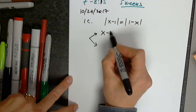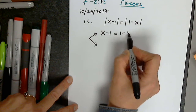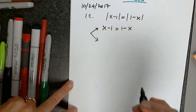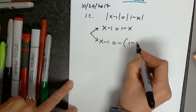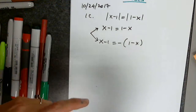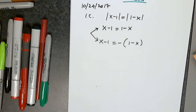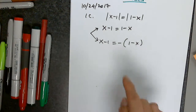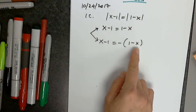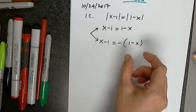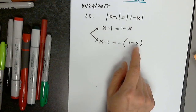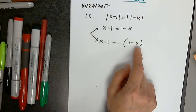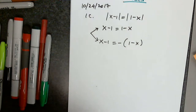Situation number one is x minus 1 equals 1 minus x, and situation number two is x minus 1 is the opposite of 1 minus x. If you didn't put in parentheses, which is okay, but you had to distribute all the way. So if you don't write this, then you have to write negative 1 plus x. If you wrote negative 1 minus x, I couldn't give credit for that part.